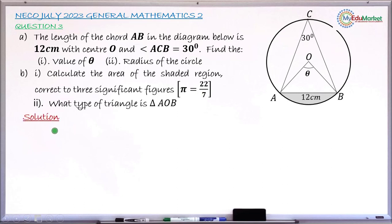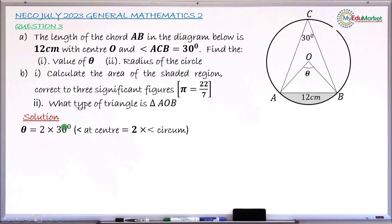Solution: Starting with question A Roman numeral 1, we are asked to find the angle theta. Theta is the angle at the center subtended by arc AB. The same arc AB subtends angle ACB of 30 degrees at the circumference. By the circle theorem — angle at the center equals twice the angle at the circumference — theta equals 2 times 30 degrees, giving theta equals 60 degrees.